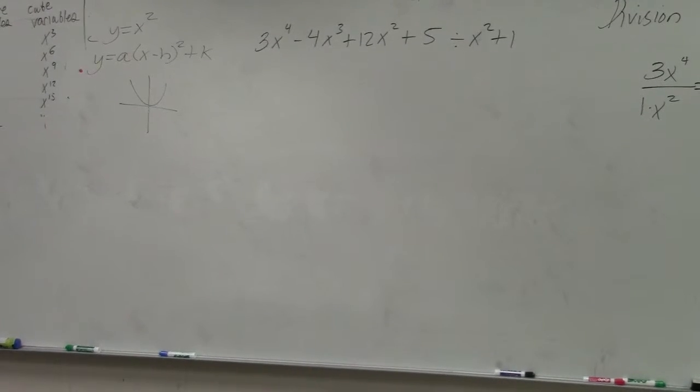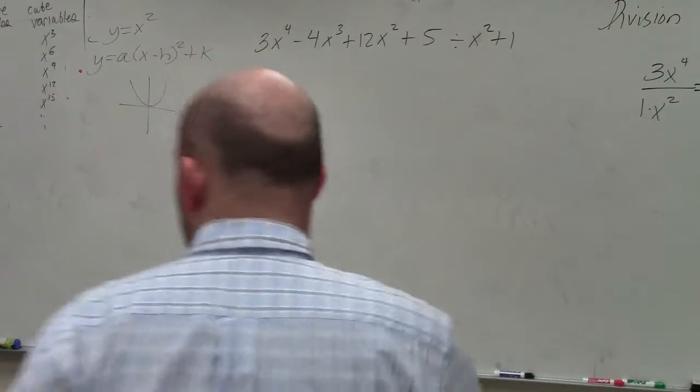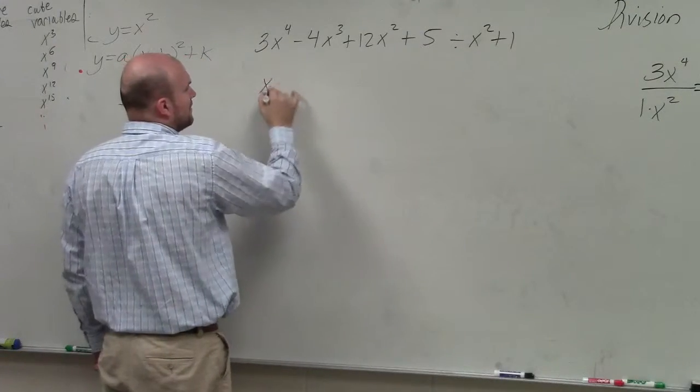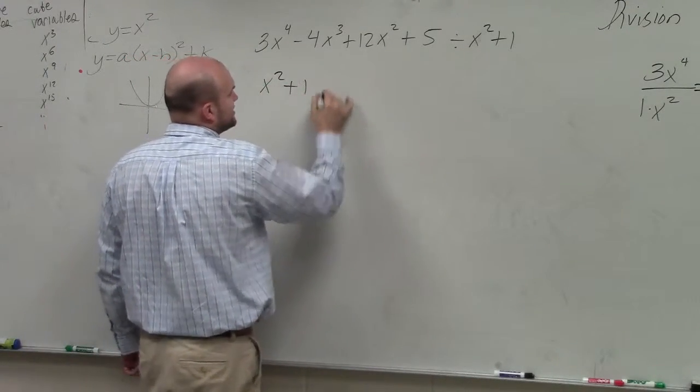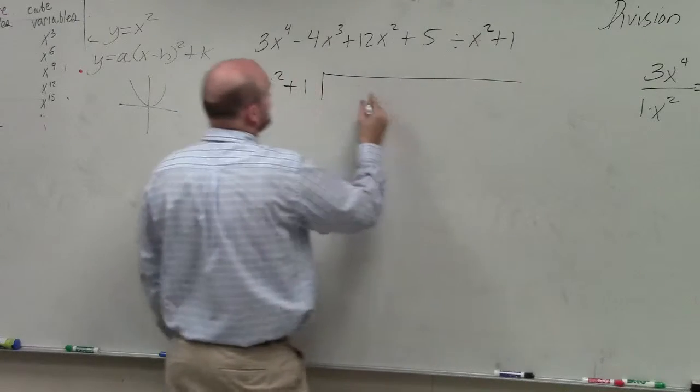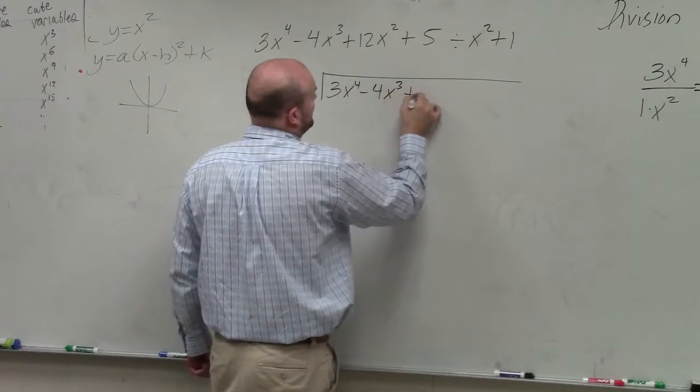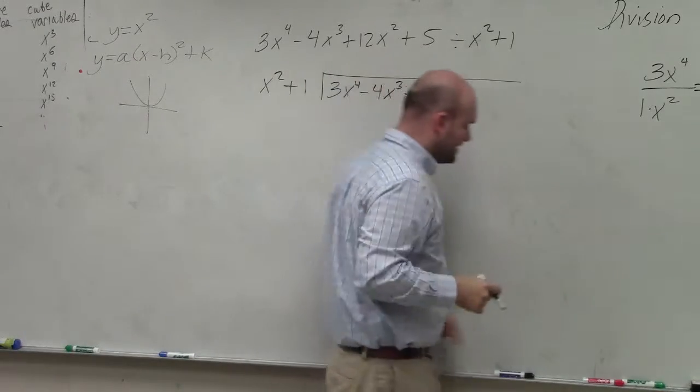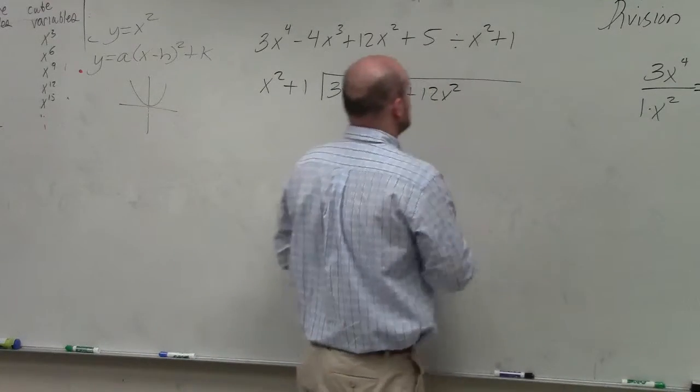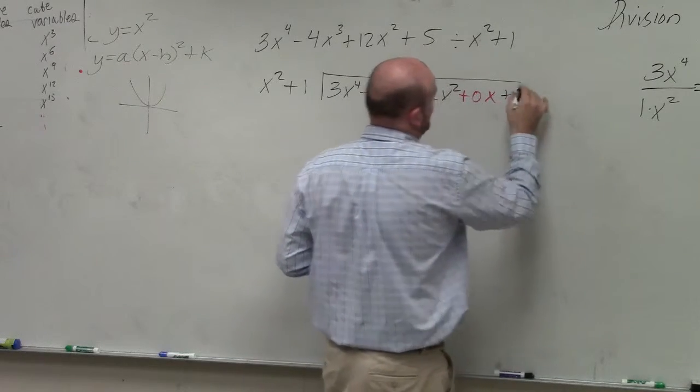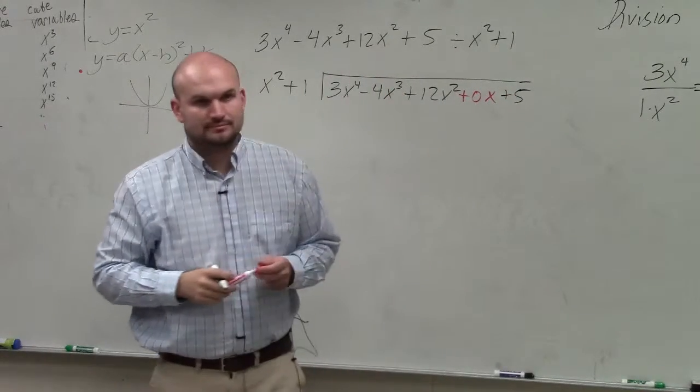All right. So in this problem, again, we're going to determine if it's a divisor. I'll make sure it's in standard form. I have x squared plus 1 is my divisor, and then that's going to divide into 3x to the fourth minus 4x cubed plus 12x squared. I notice that there is not an x term, so therefore I'm going to add a 0x plus 5. Does everybody see what I did?